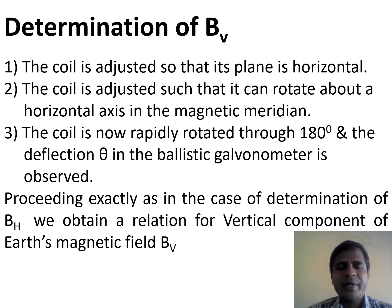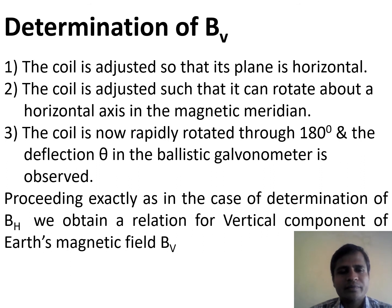To determine the vertical component of Earth's magnetic field, we use the same circuit diagram. The procedure for finding BV: first, the coil is adjusted so that its plane is horizontal. Then the coil is adjusted such that it can rotate about a horizontal axis in the magnetic meridian. Next, the coil is rapidly rotated through 180 degrees and the deflection theta V in the ballistic galvanometer is observed and noted down.